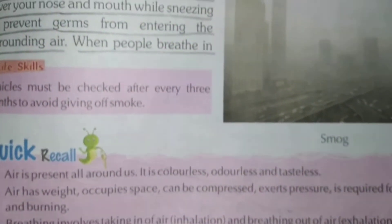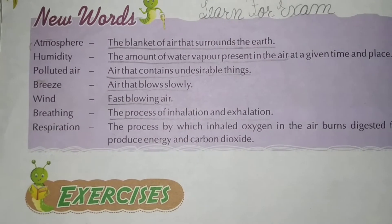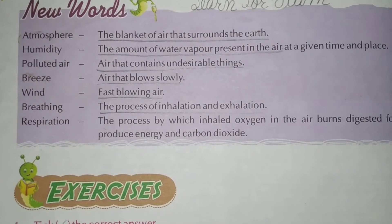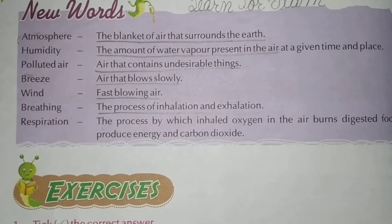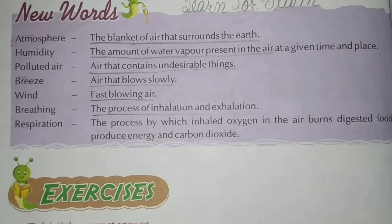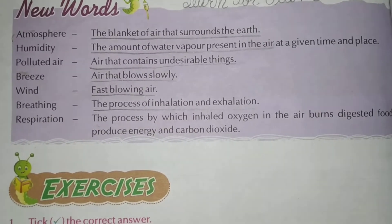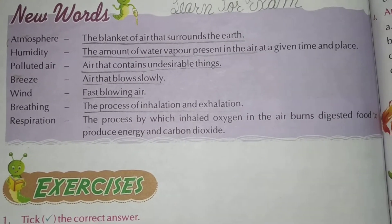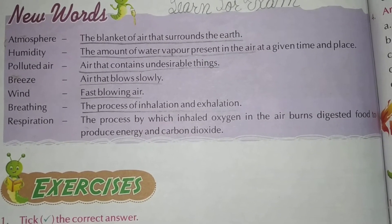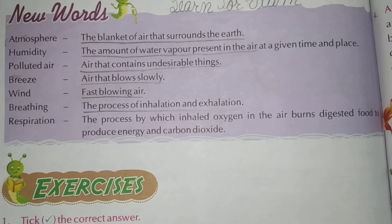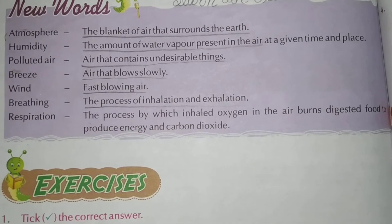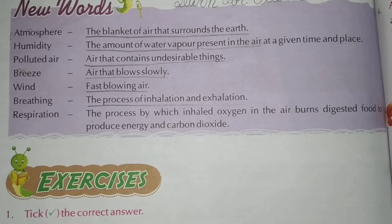Dear students, now we will do new words. Write down, learn for exams. Number 1: What is atmosphere? Underline — the blanket of air that surrounds the earth.